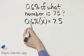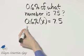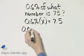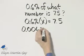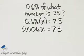Take a moment and write six-tenths percent as a decimal. To do so, move the decimal point two places to the left. If you do so, you'll have six-thousandths x is equal to seven and five-tenths.